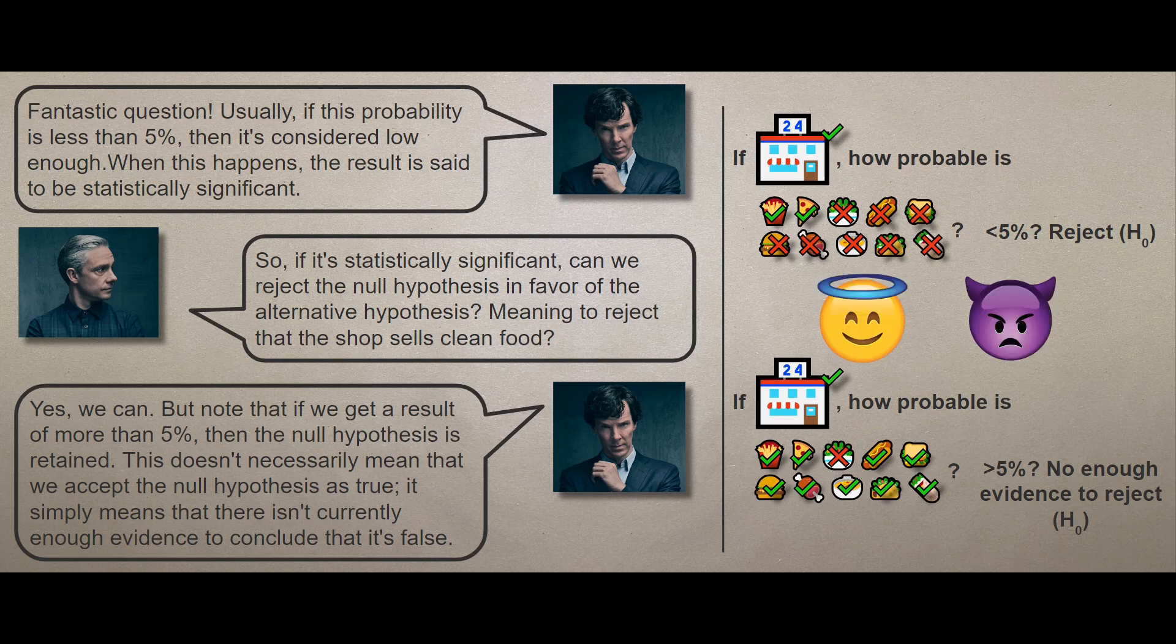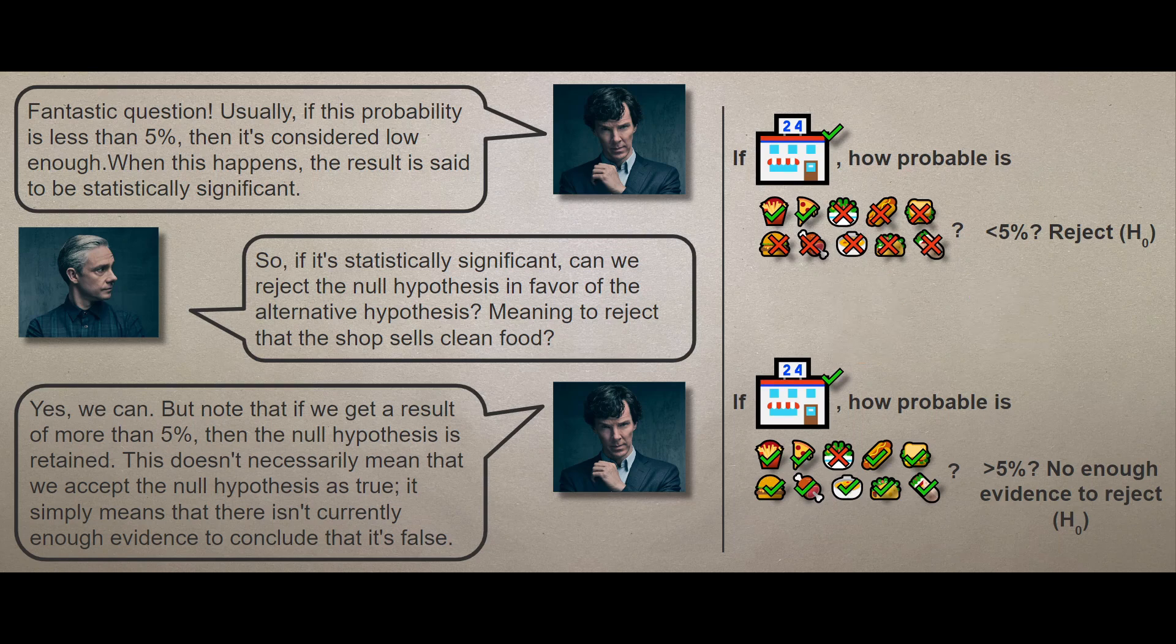Going back to our jurisdictional example, if the prosecution lacks strong evidence that the defendant committed a crime, the defendant is found as not guilty rather than innocent. Similarly, a statistical test can't prove the null hypothesis but can provide evidence against it.